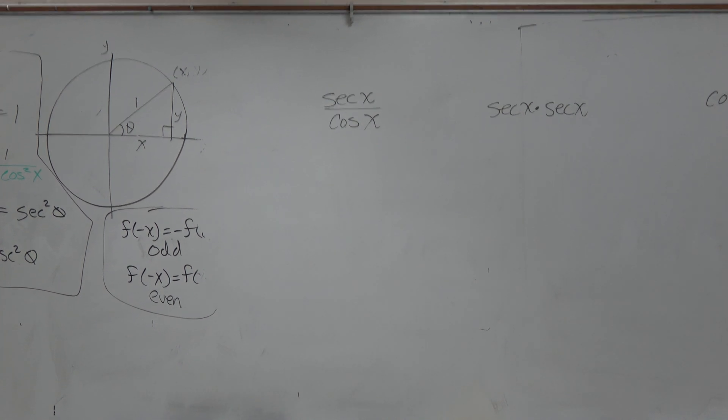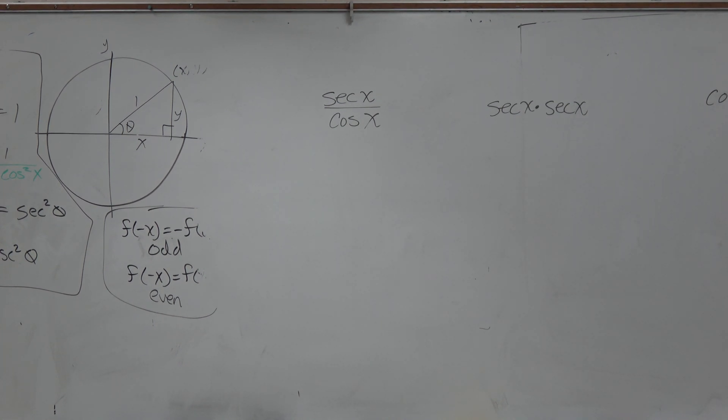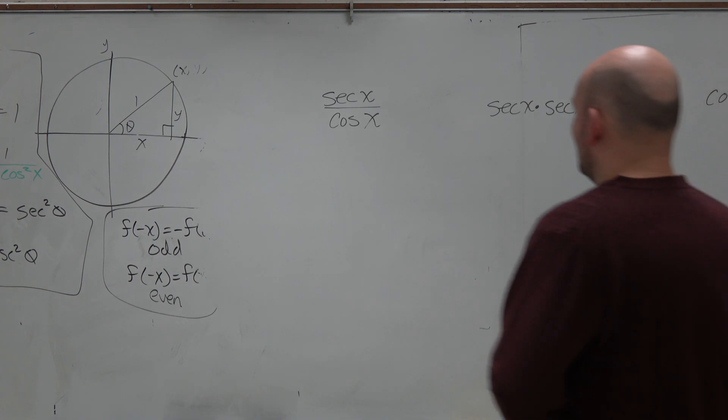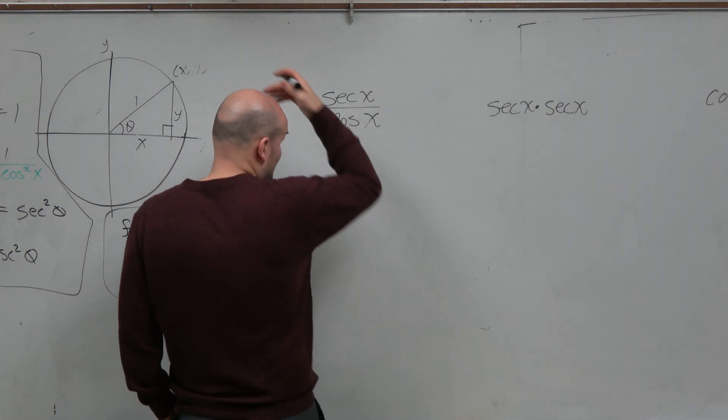What's up, everybody? I'm going to get started. OK, so in this one, what we're going to look at is you have the secant of x over cosine of x.